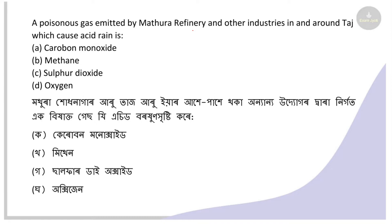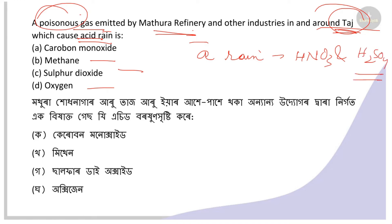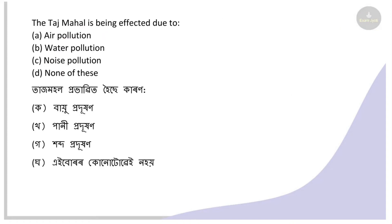Next: The poisonous gas emitted by Mathura refinery and other industries near the Taj Mahal which causes acid damage — options: carbon monoxide, methane, sulfur dioxide, oxygen. The acid formed is sulfuric acid and nitric acid. Since nitrogen dioxide is not an option here, the right answer is sulfur dioxide. This gas causes corrosion of the Taj Mahal's marble.